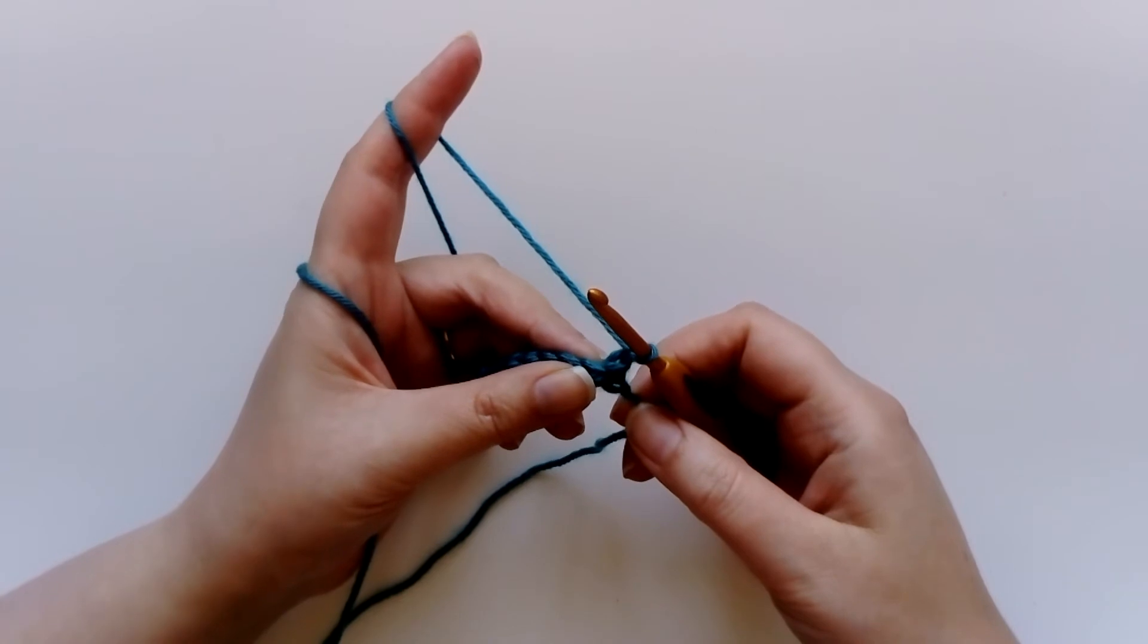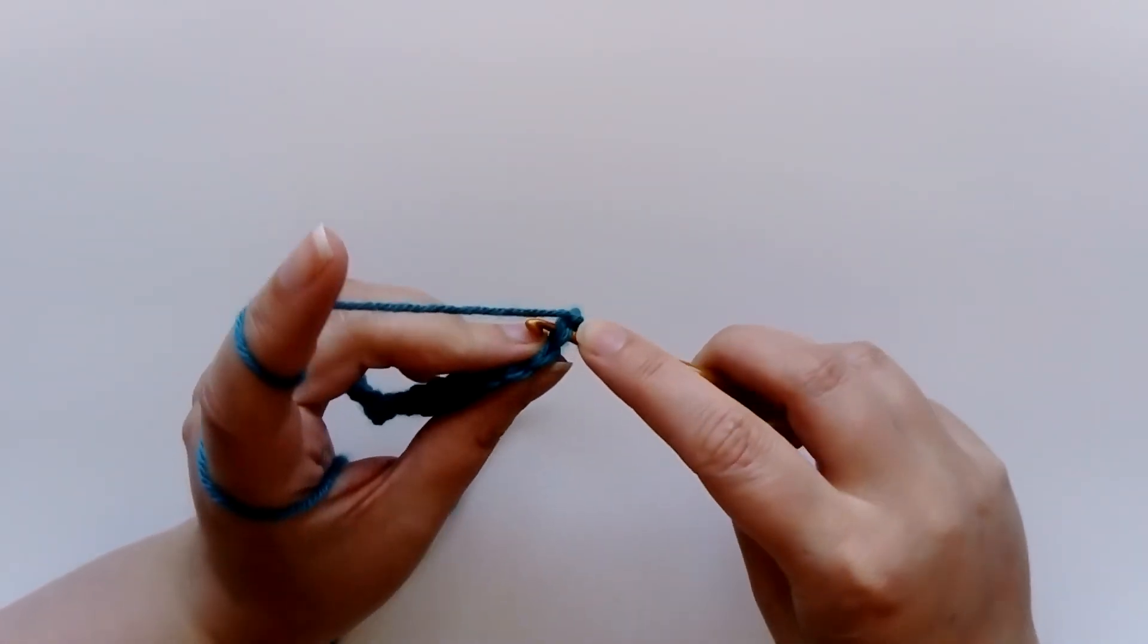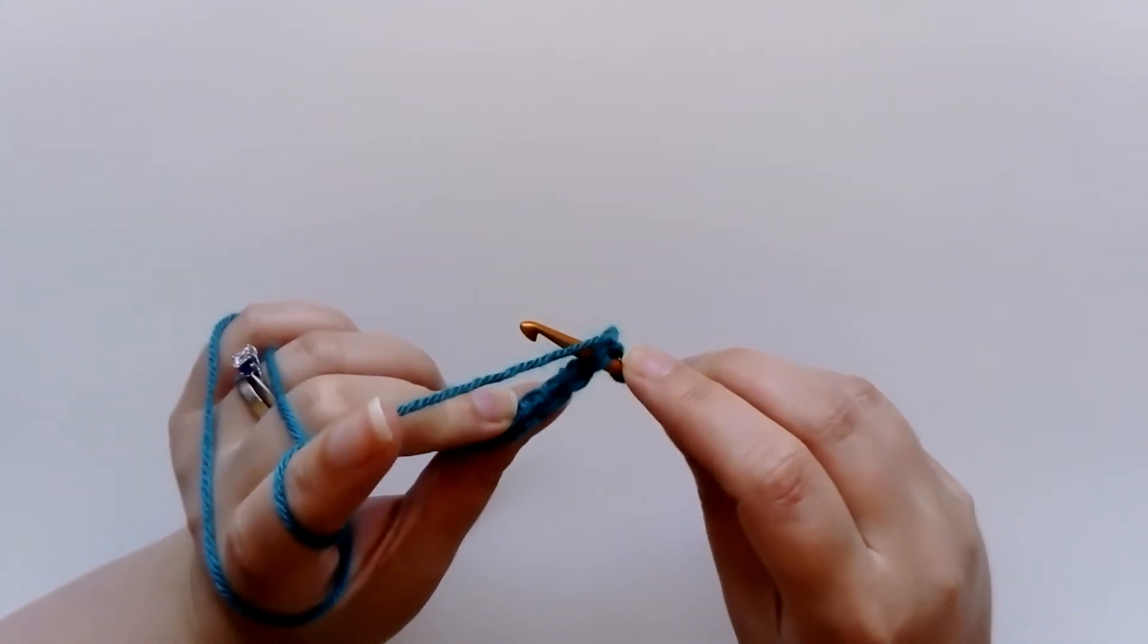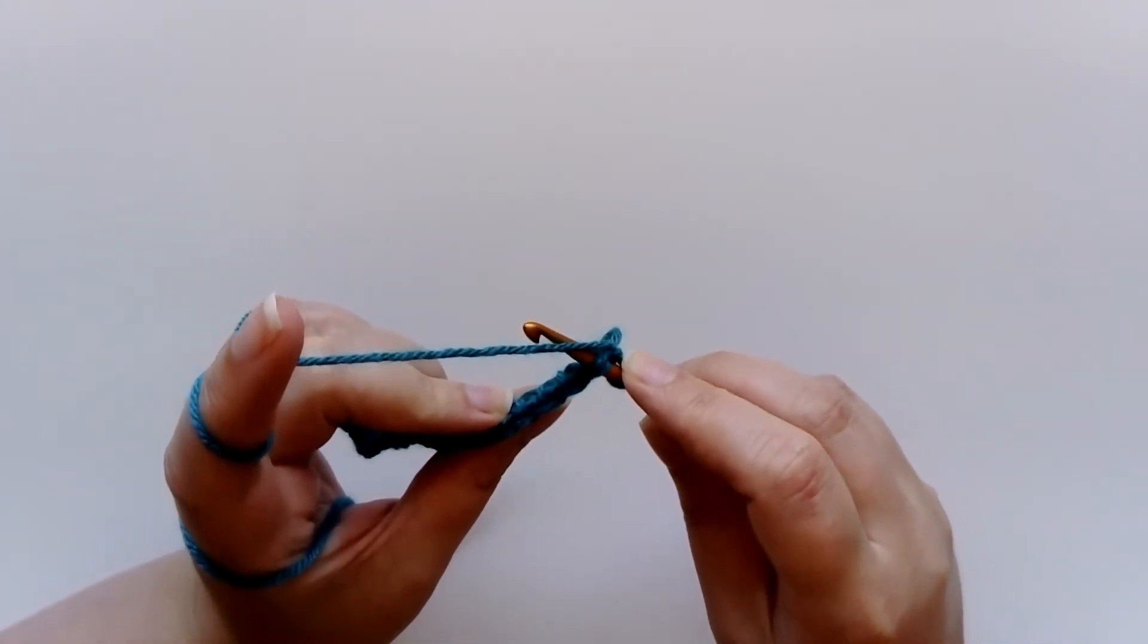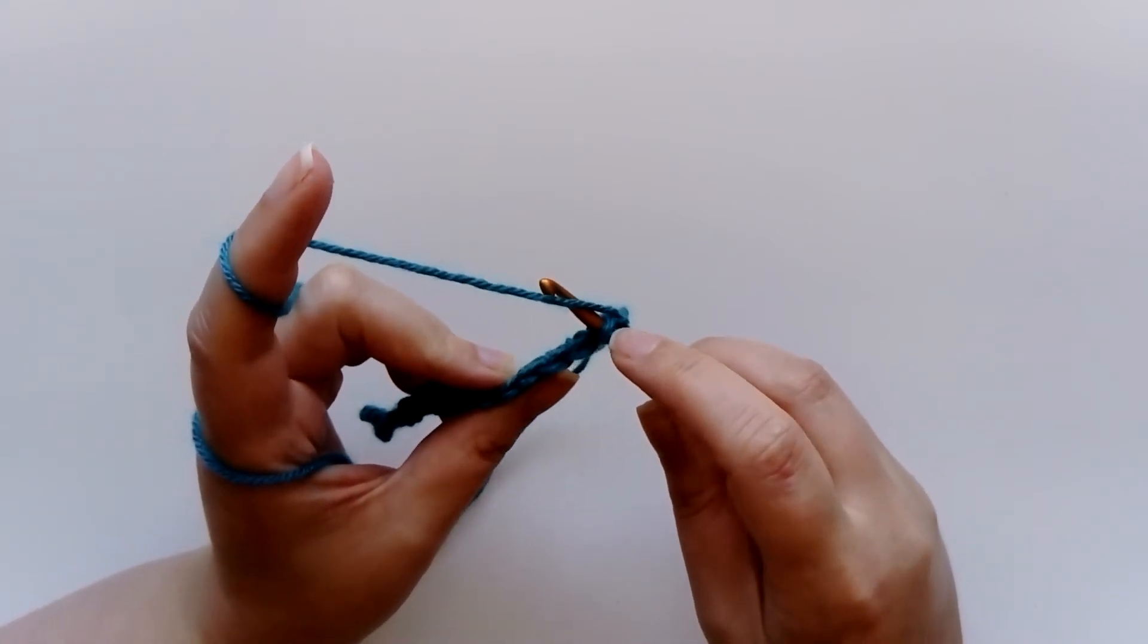Now this looks slightly different from working into the chain stitches. You can see I need to put my hook into the top of a stitch. And if you look along the row of stitches, they all look like little V shapes or like little pieces of pearl barley. You need to make sure that your hook goes in underneath two strands.